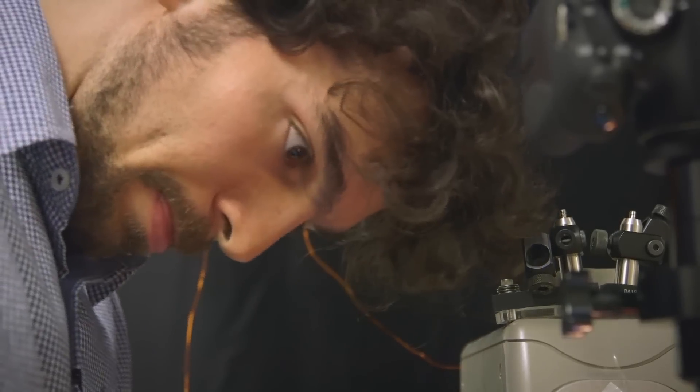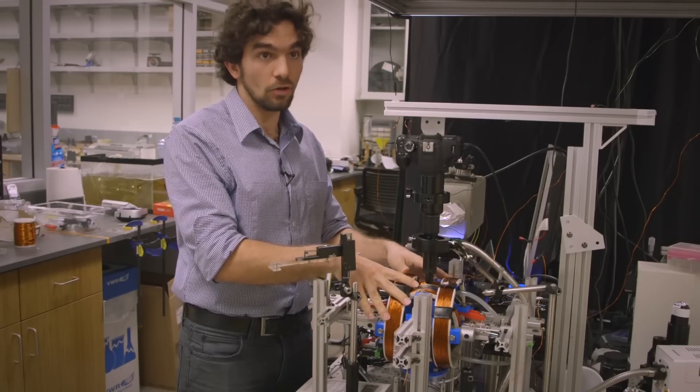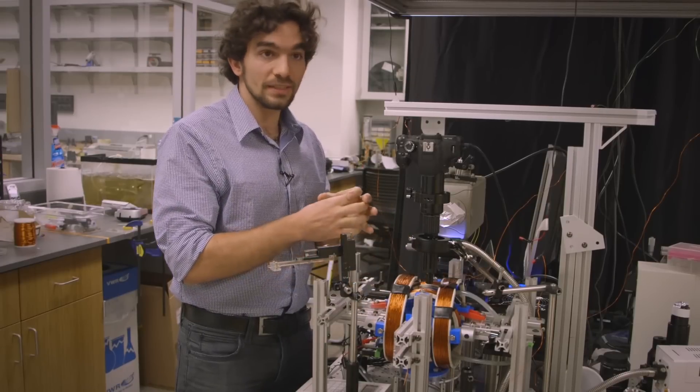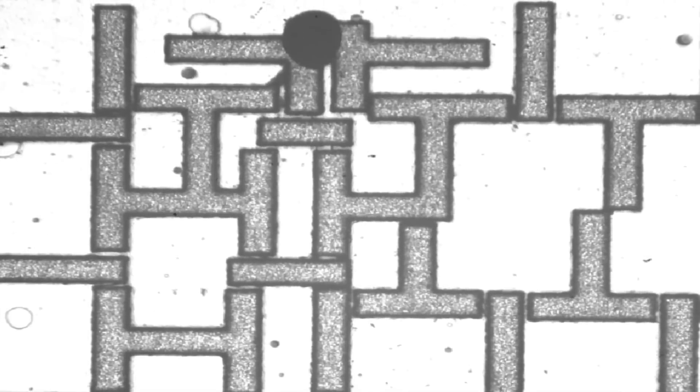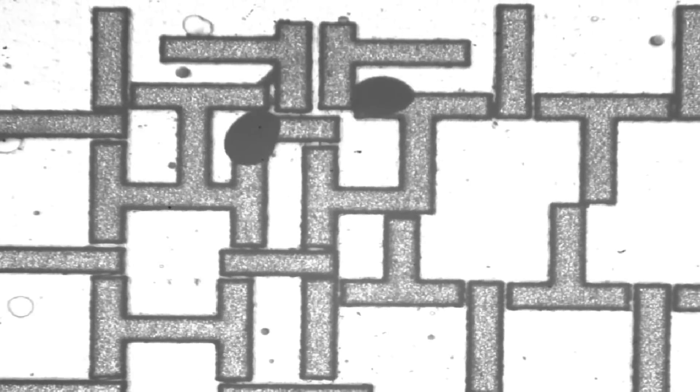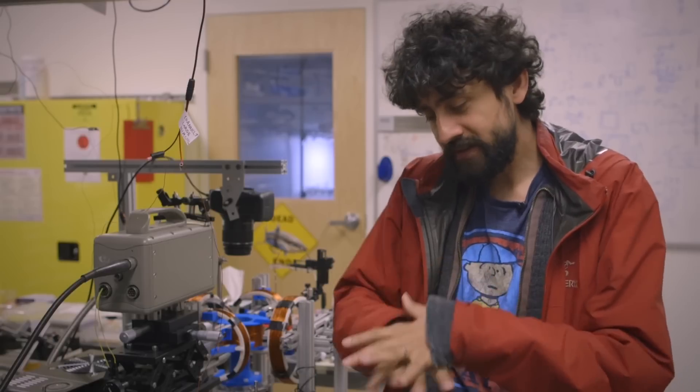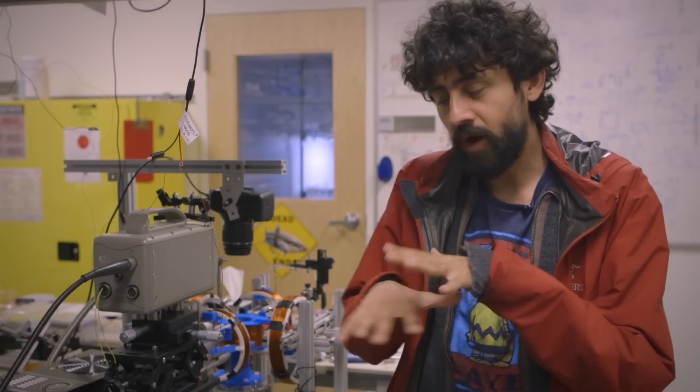On our microfluidic chips, we have these tracks of metallic bars that get magnetized. They look like little T and I bars. The way you organize them on a two-dimensional surface gives you arbitrary control of a magnetic landscape.